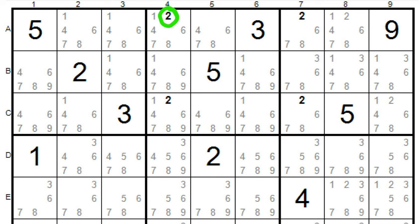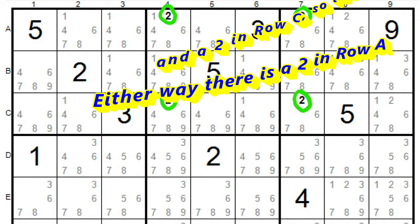Well, if this two is true, then this two is also true. And if this two is true, then this two is also true. So either way, we have a two in row A, and another two in row C, already spoken for.